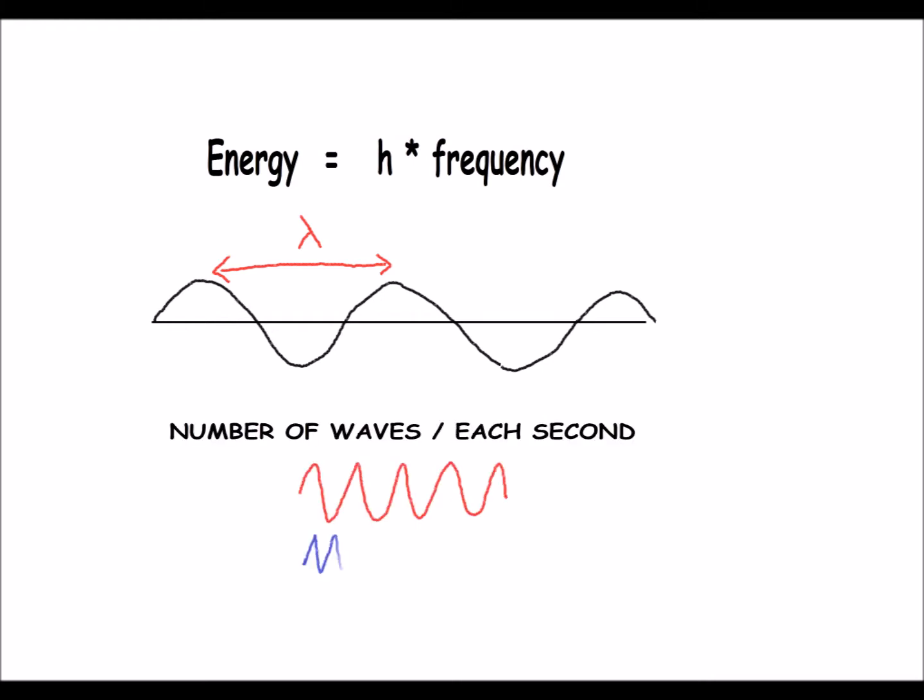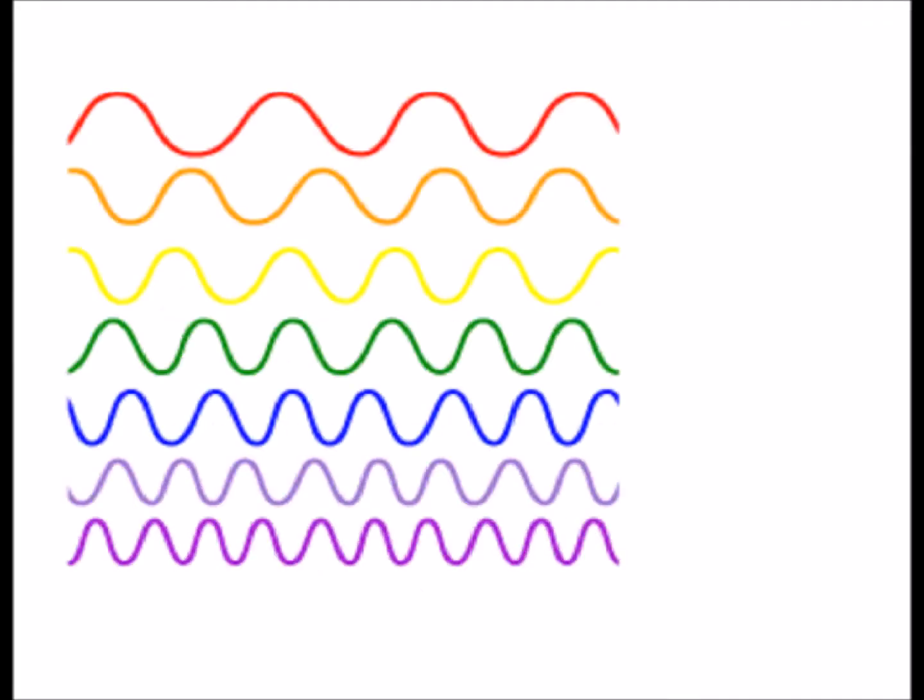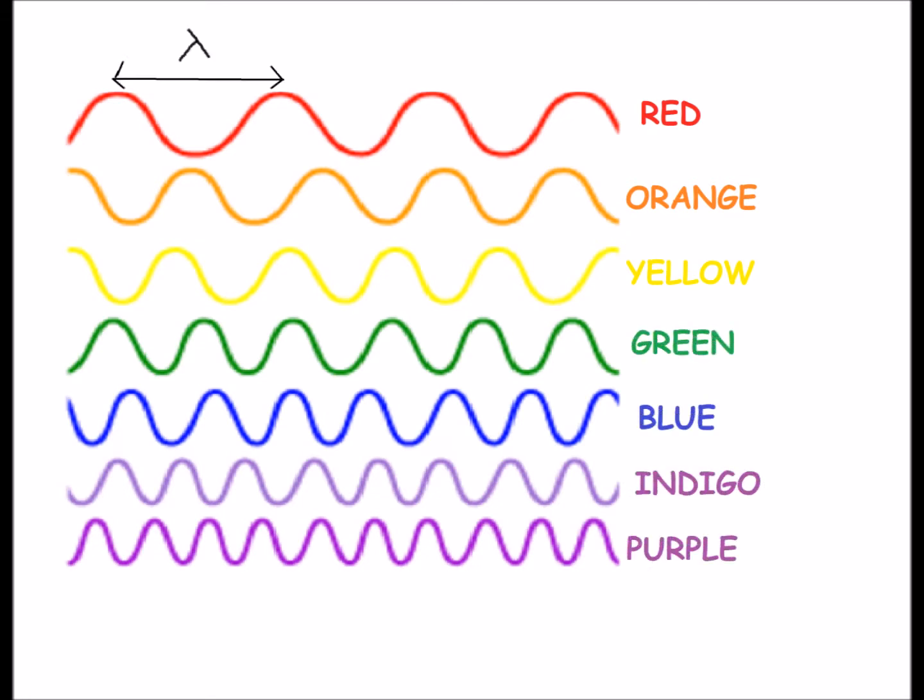Frequency is the number of waves that pass by a particular point each second. The sun produces white light, which is made up of seven colors: red, orange, yellow, green, blue, indigo, violet. Red light has the longest wavelength and blue light has the shortest wavelength.